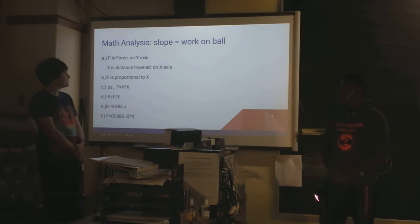This is our math analysis. So basically, the graph was a force versus distance. And so this slope was gonna be work just because of the integral caused it to be force over, it's force derivative of distance. And then it'd be, the derivative of x to the 1 would be x to the negative 1.